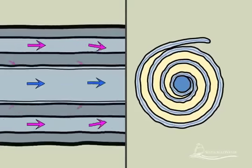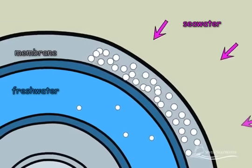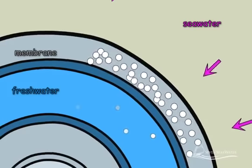The salt particles in the seawater are rejected from passing through the membrane to the freshwater side and remain behind on the concentrated saltwater side.